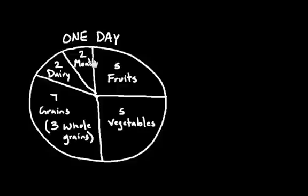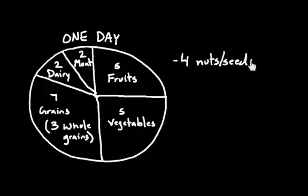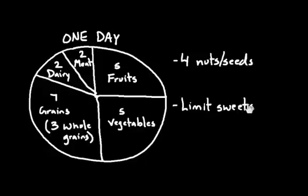So these are the servings in one day that it recommends. And on top of that, in a week it says I should probably have about four servings of nuts and seeds. And it also went on to say that I should probably try to limit how many sweets I take in. This would be like candy or any sort of dessert, doughnuts, and any sort of fatty food or oil. So fats and oils. And this would be like potato chips or fries, things like that. So really try to limit those things.